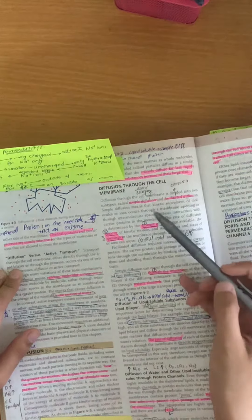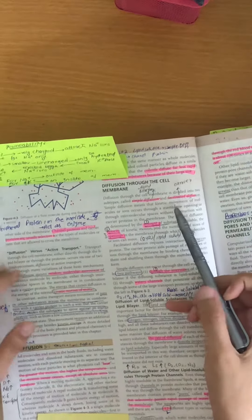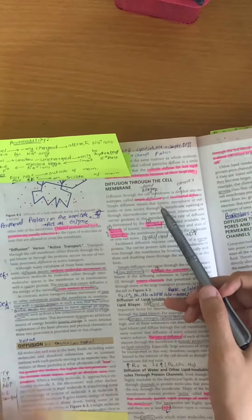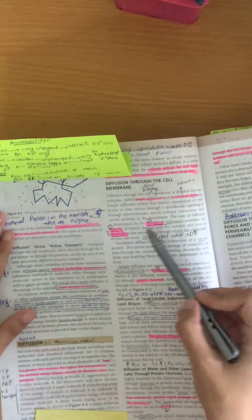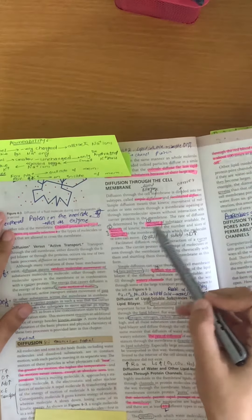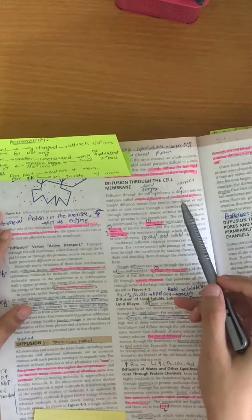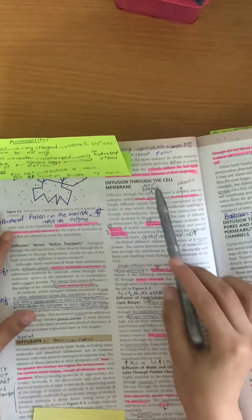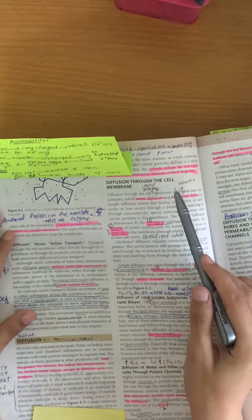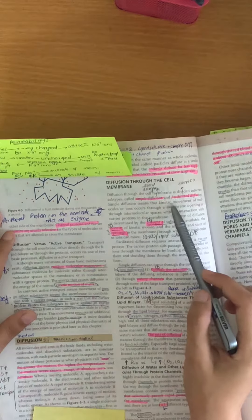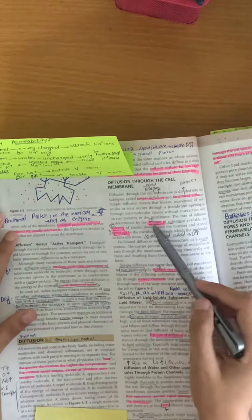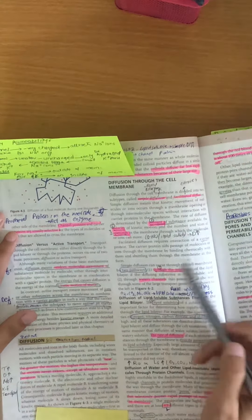Then, the rate of diffusion depends on certain factors. If the size of the molecule is larger, the diffusion will be slower. You can read these basic things. This is very important.